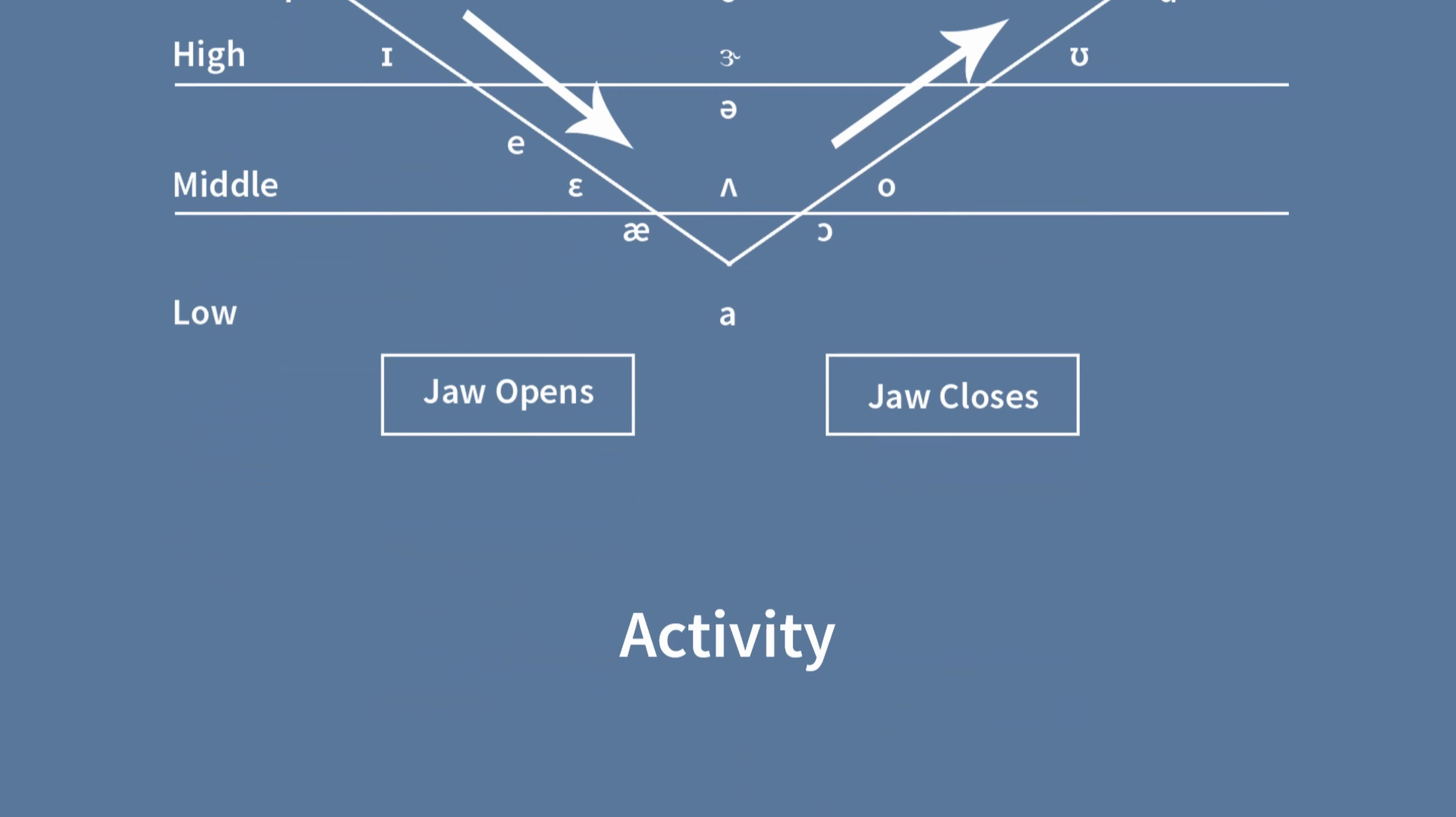To help you better remember the different vowel sounds and symbols, let's have an activity. Identify the IPA symbol of the underlined letter or letters in each word. For example, late. Comment down your answers and I'll do my best to check them.